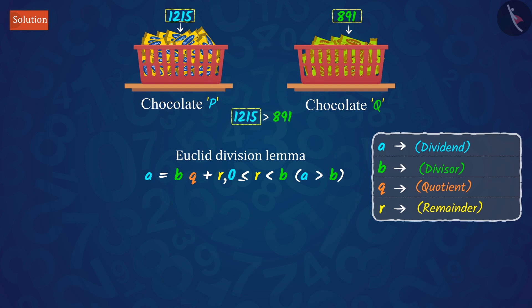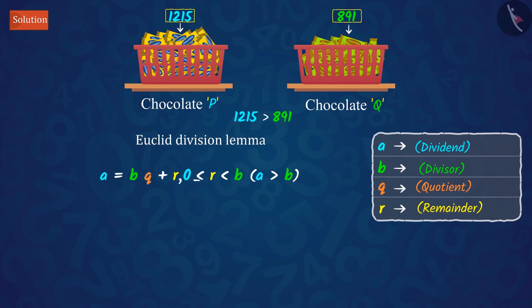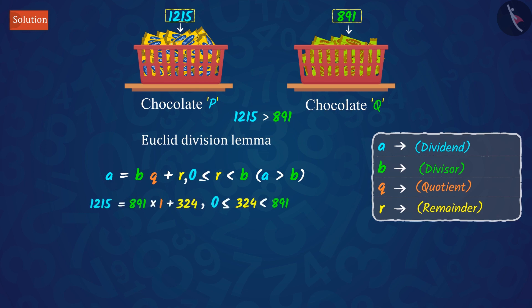Here, 1215 is greater than 891. Now we will use Euclid's division lemma on these, which gives us this value. Since the remainder is not equal to 0, we apply Euclid's division lemma again to divisor 891 and remainder 324.